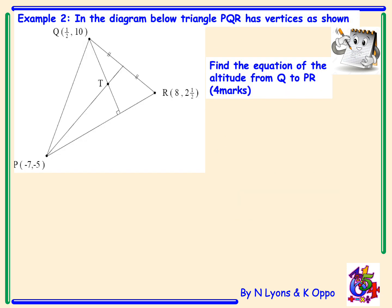Example 2: In the diagram below, triangle PQR has vertices as shown. Find the equation of the altitude from Q to PR. We are going to start with the gradient of PR.